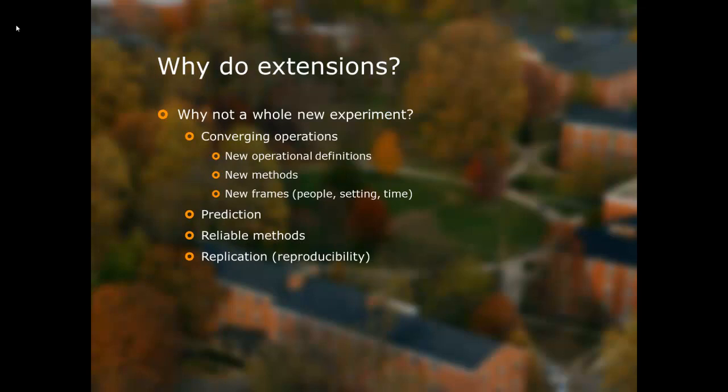Why do extensions? Why not do a whole new experiment? The idea of converging operations: we use different operational definitions, different research methods, different frames to converge upon the phenomena we're studying, so that we know that what we have discovered is an actual psychological phenomenon and is not an artifact of the specific methodology we use. By using slightly different methodologies — new operational definitions, different research methods, or different frames such as external validity (people, setting, and time) — we can start to feel more confident that what we're looking at is something real psychologically.